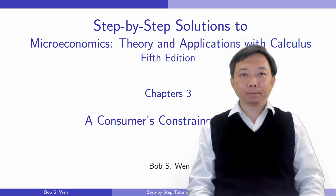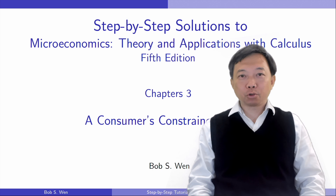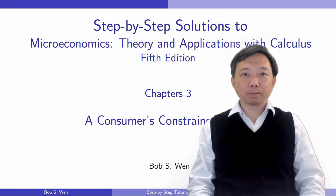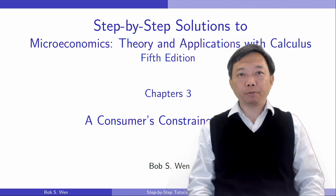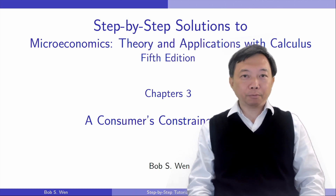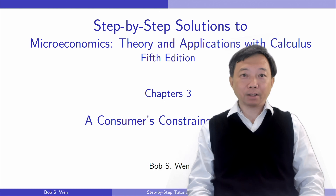Hi, I'm Bob. Let's finish the exercises for section 3.4, Constrained Consumer Choice, today. I use the textbook Microeconomics: Theory and Applications with Calculus, the fifth edition, by Professor Jeffrey Perloff. You can find the link of an introductory Microeconomics course in the description below. Let's get started.